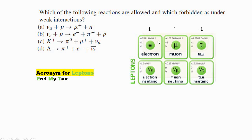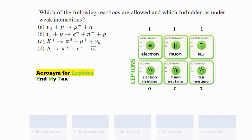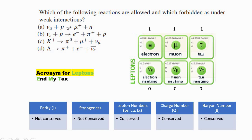Let's take a look at the charges. Electron, muon, and tau have a negative one charge, and electron neutrino, muon neutrino, and tau neutrino have zero charge. When talking about weak interactions, strangeness and parity are not conserved, but lepton numbers, charge number, and baryon number are conserved. Every time we want to decide whether a reaction is allowed or not, we calculate the lepton numbers, charge numbers, and baryon numbers.